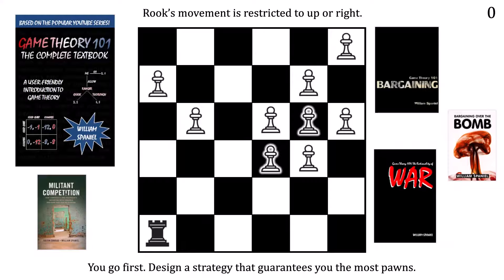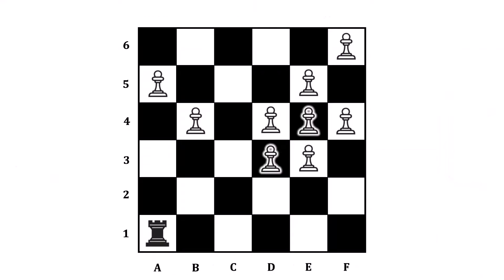Are you ready for the answer? To start out, let's think about what happens if F1 is your opening move. From here, the game is going to be a draw. There are only two pawns left to capture. F4 and F6.